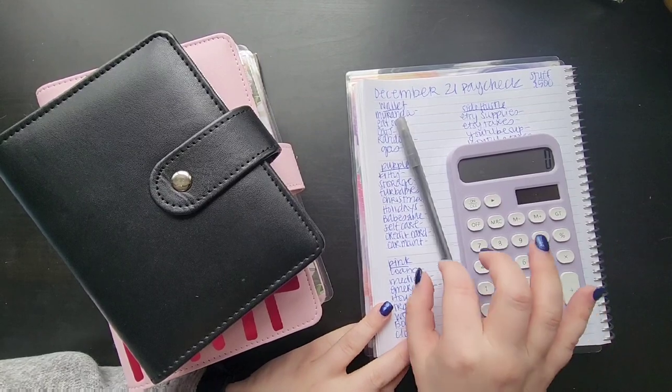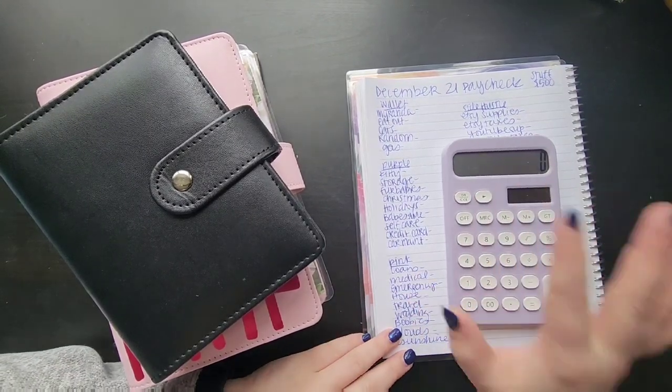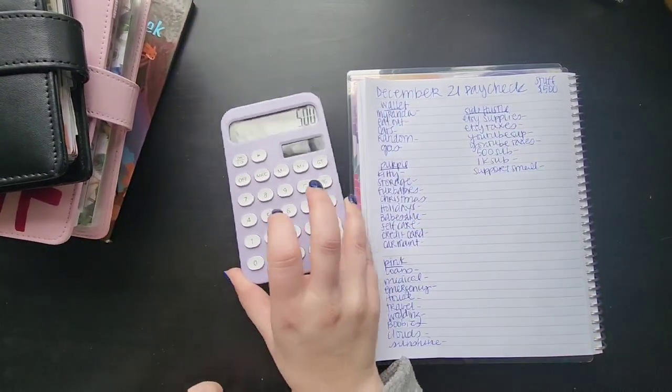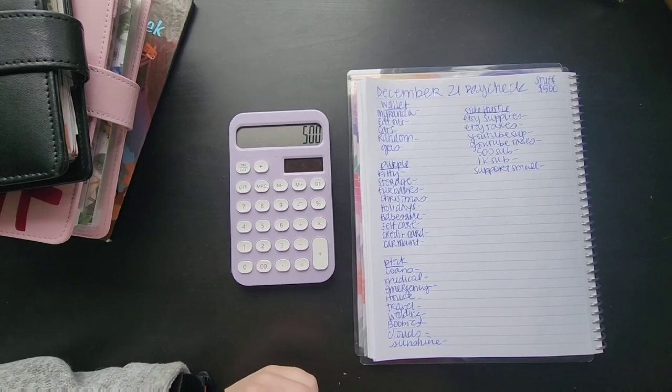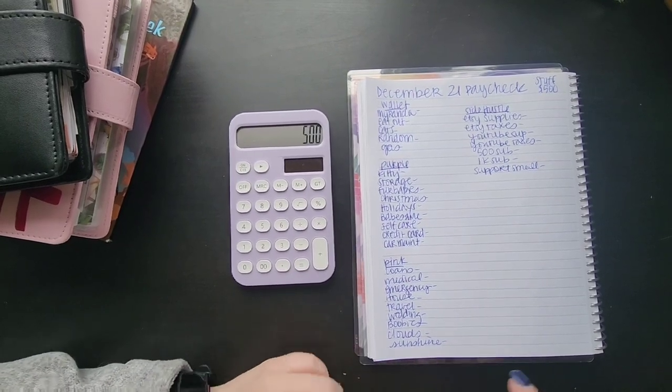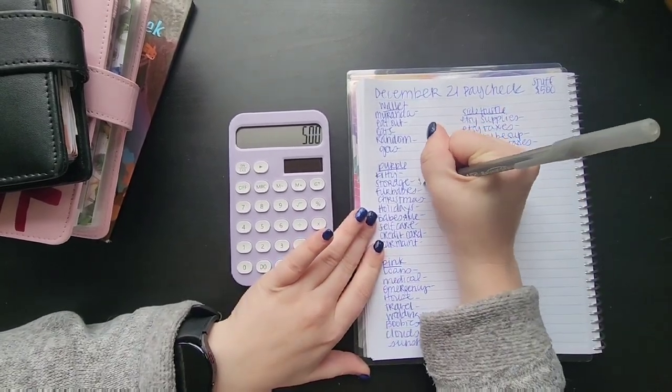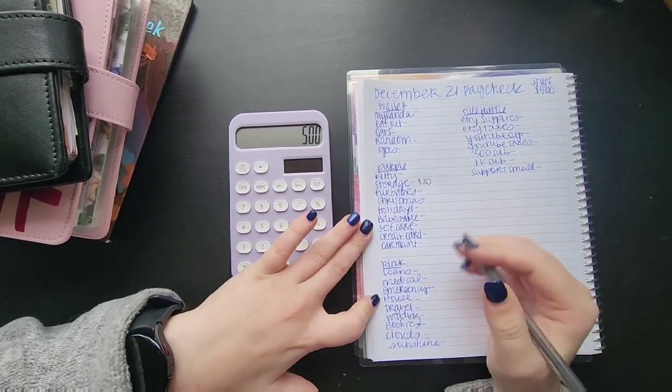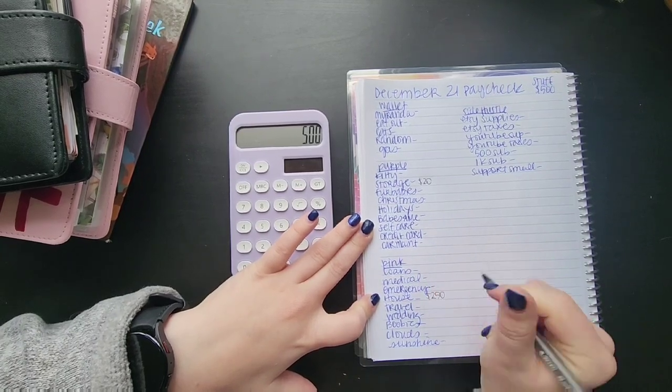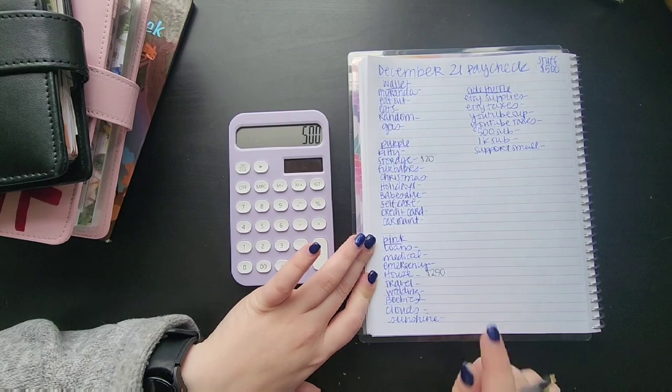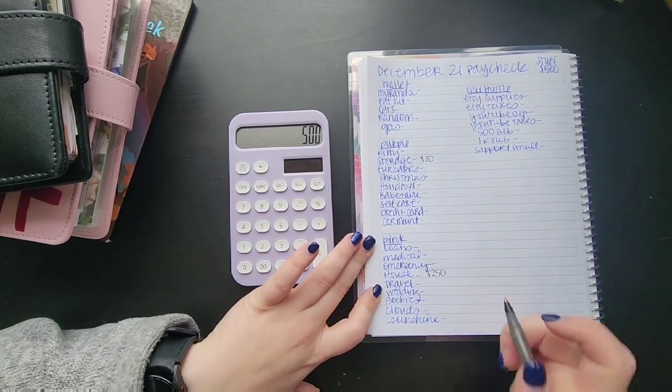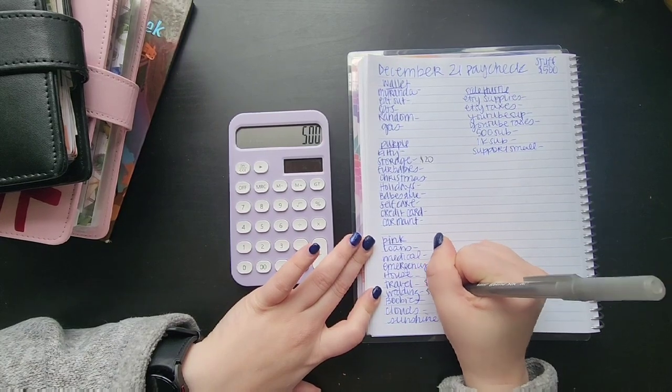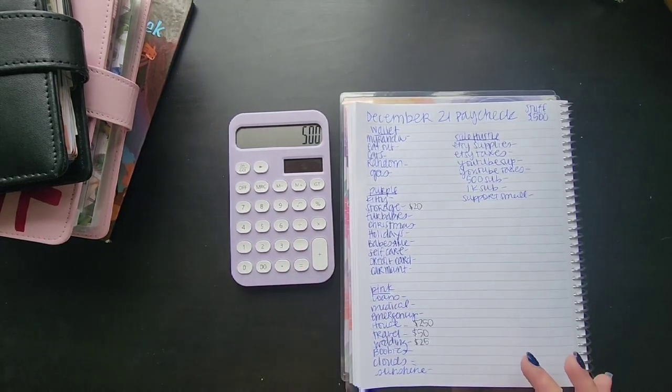So I am going to be stuffing next time I stuff five hundred dollars. We are just going to budget out that five hundred dollars. So we will just put 500 on the calculator and we will of course start with all the things that we already know. Storage always gets 20, house always gets 250 except for last time it did not because we had a weird paycheck.